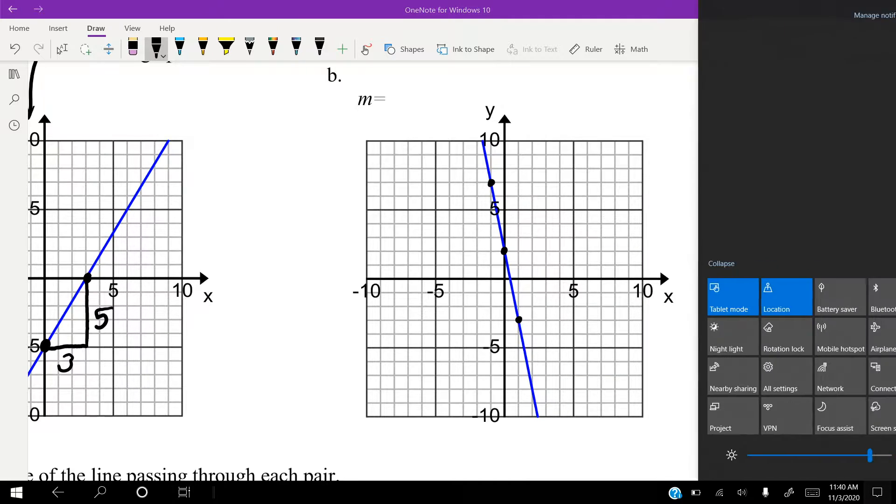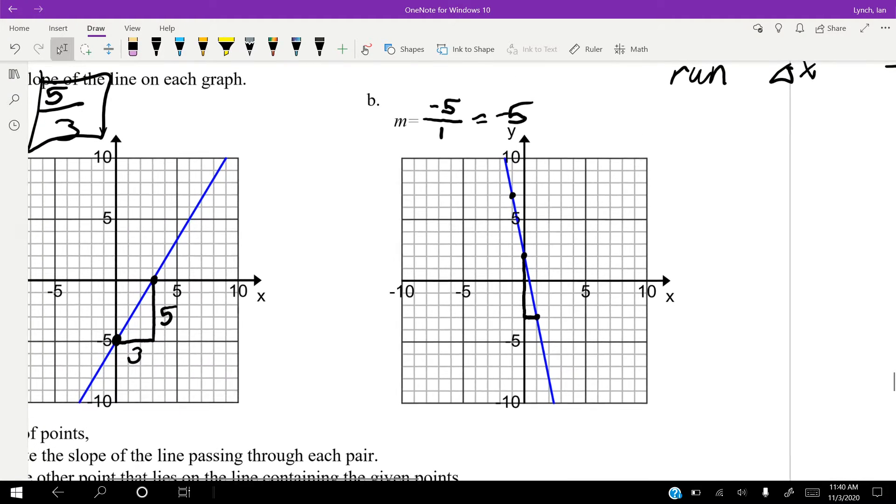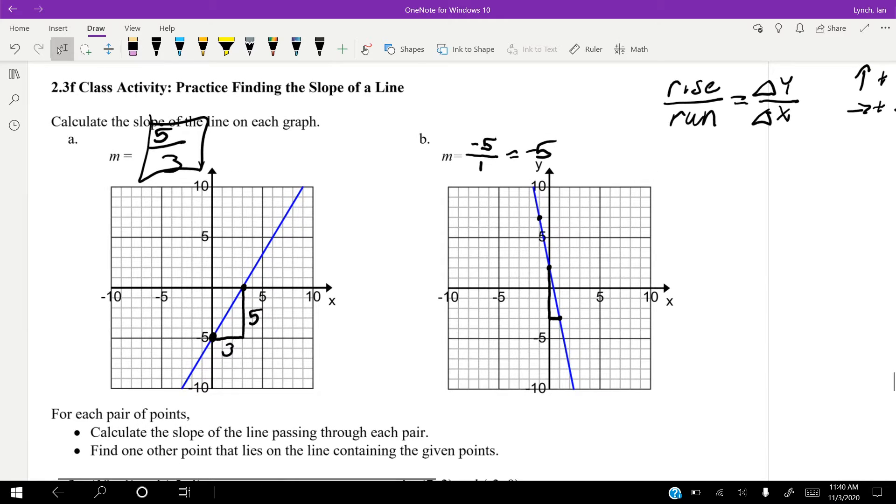So how far are we going down? Because you guys know how I like my right triangles. We're going down one, two, three, four, five. So if we're going down, it's going to be a negative five. And our run is positive one because we're going to the right one. So our slope then is negative five over one, or negative five. And you guys know how I like my right triangles with the right angle in the bottom, so that's why I did my triangle that way.